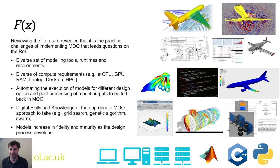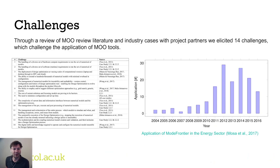We want to do this throughout the design process as we create new models of higher fidelity that we may wish to add to the optimization. Being able to evaluate our design options against all our models and being able to update the optimization as our models mature and new ones are created is what we describe as achieving through-life whole-design design optimization. In our paper we reviewed design optimization literature over the past few years and developed 14 challenges in actually achieving this.